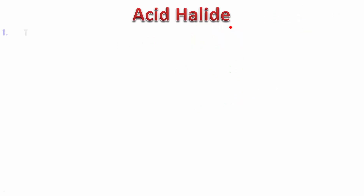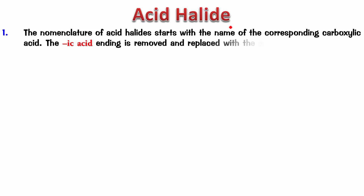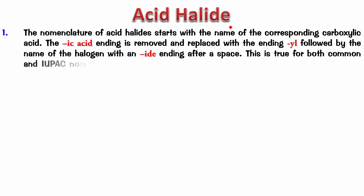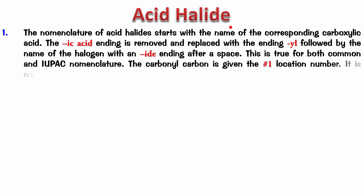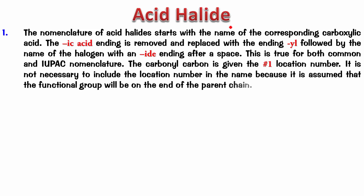The nomenclature of acid halides starts with the name of the corresponding carboxylic acid. The 'ic acid' ending is removed and replaced with the ending 'yl' followed by the name of the halogen with an 'ide' ending after a space. This is true for both common and IUPAC nomenclature. The carbonyl carbon is given the number 1 location. It is not necessary to include the location number in the name because it is assumed the functional group will be on the end of the parent chain.